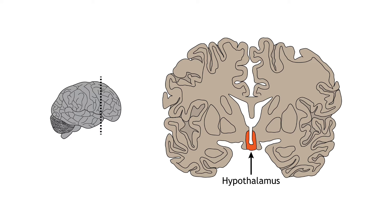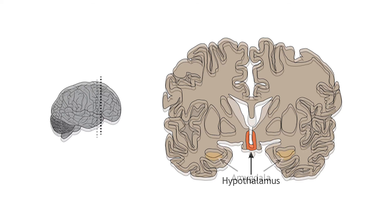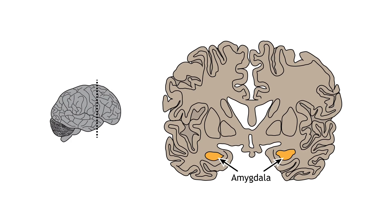The hypothalamus is also involved in the regulation of blood composition, sleep, reproduction, and stress. Although the hypothalamus directly controls the body's stress response, it is influenced by activity in other regions of the brain when information from the environment is processed.